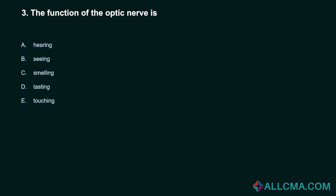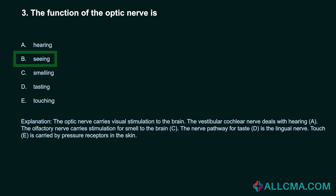Question 3: The function of the optic nerve is: a) hearing, b) seeing, c) smelling, d) tasting, e) touching. Correct answer: B, seeing. The optic nerve carries visual stimulation to the brain. The vestibulocochlear nerve deals with hearing. The olfactory nerve carries stimulation for smell to the brain. The nerve pathway for taste is the lingual nerve. Touch is carried by pressure receptors in the skin.